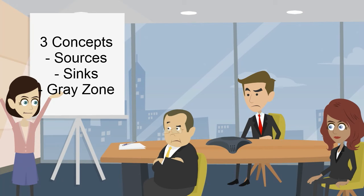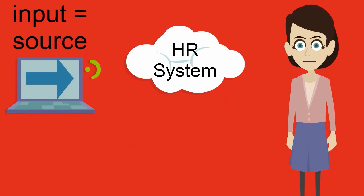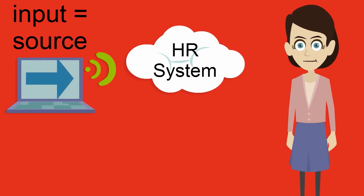There are three other key concepts for you to understand: sources, sinks, and the gray zone. Sources are the inputs to the system. These are often stakeholders or technical and non-technical system interfaces. In our example of the human resources system, we could see the document management system as a potential source of recruitment approval information, potentially acting as a technical interface into our system.